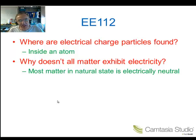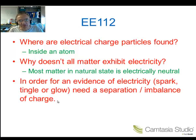See, in order to have evidence of electricity, in order to have a spark, tingle, or glow, you need a separation or an imbalance of charge. And one example of that is a chemical battery like this. This is a 9-volt chemical battery that I'm sure you've all seen, and a chemical battery like this uses chemical energy to separate electrical charge. The terminal that we label the minus terminal has excess electrons on it, and the terminal that we label the plus terminal has excess positive charge.